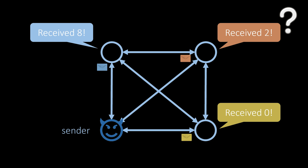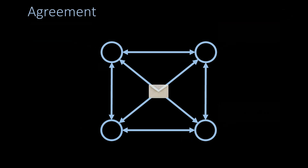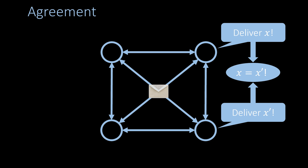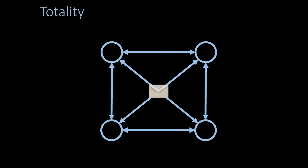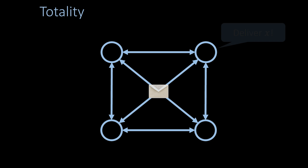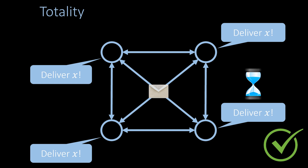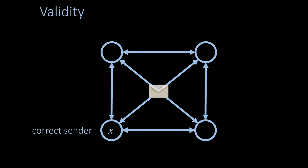Now that we understand better what can go wrong, let's define reliable broadcast. A reliable broadcast protocol should have the agreement property — that is, if messages are delivered, they must all be the same message. The second property is called totality: if a correct node delivers a value, it may take some time but the message is eventually also delivered at all other correct nodes. The third property is the validity property, which says that if the sender is a correct node and it sends some value x,